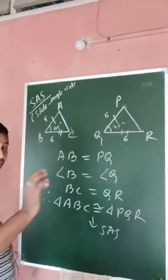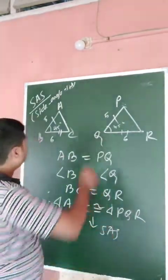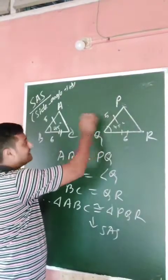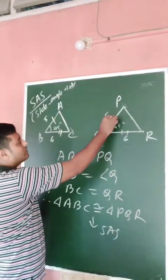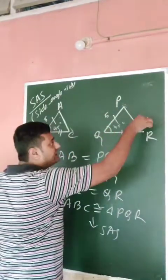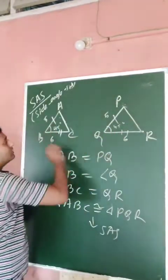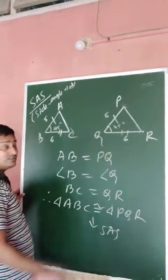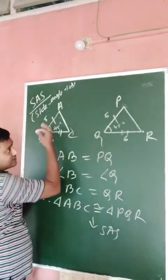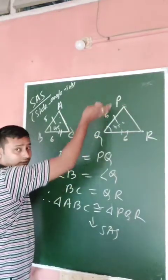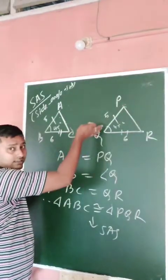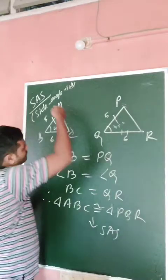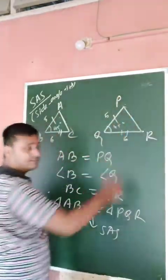You must remember that the sides must be corresponding. AB corresponds to PQ — you cannot take AB equal to PR or QR. If you take BC, then you must take QR. If you take AC, then you must take PR.